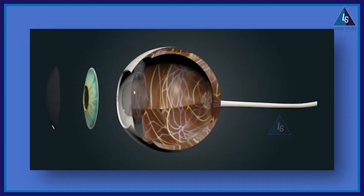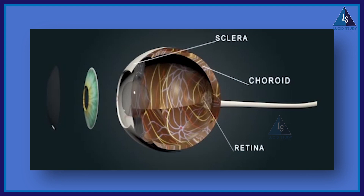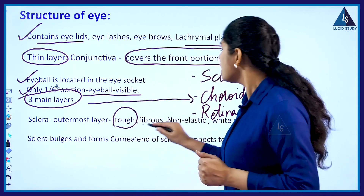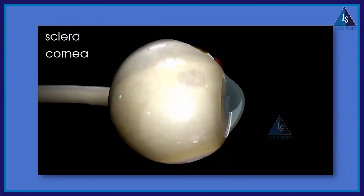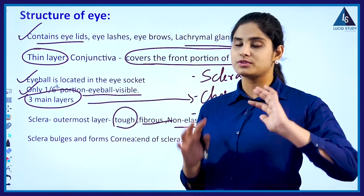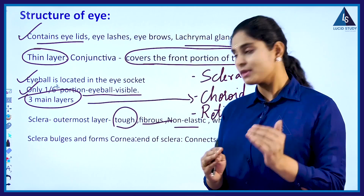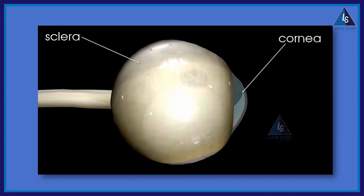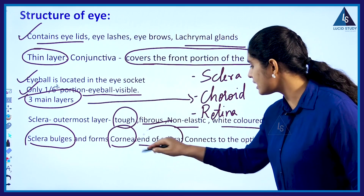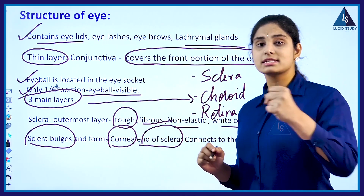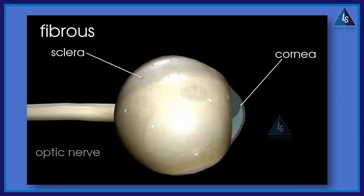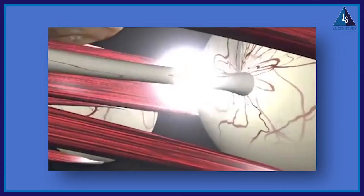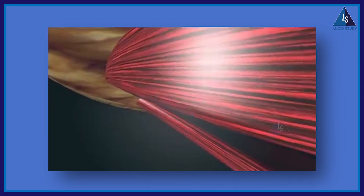The sclera is the outermost layer of the eye. It is very tough, fibrous in nature, non-elastic, and white in color. When the sclera bulges, it forms a structure called the cornea. At the end of the sclera, it gets connected to a nerve called the optic nerve, which helps in taking the impulses of sight or vision.